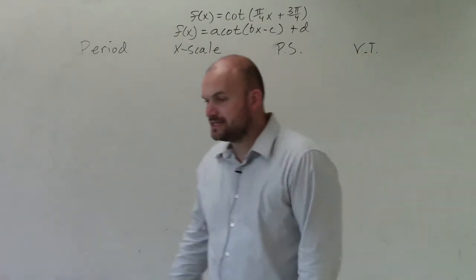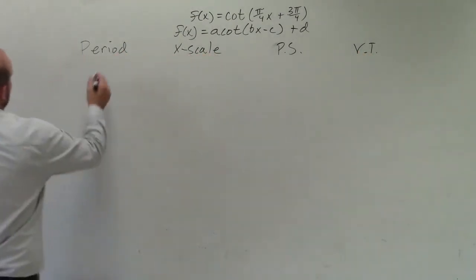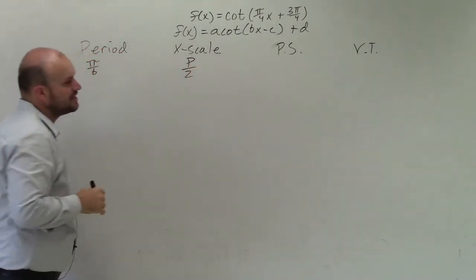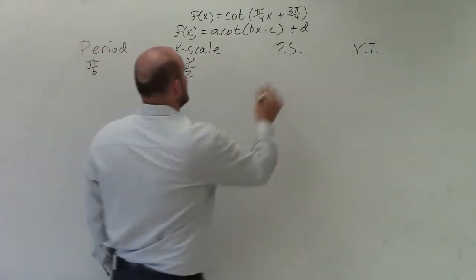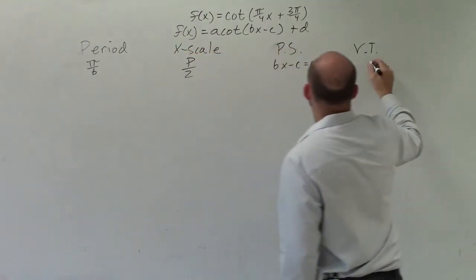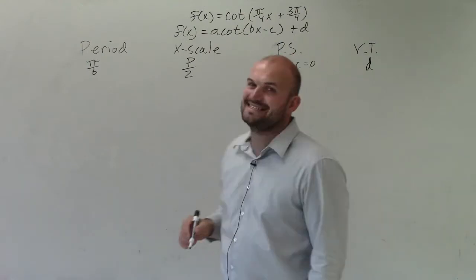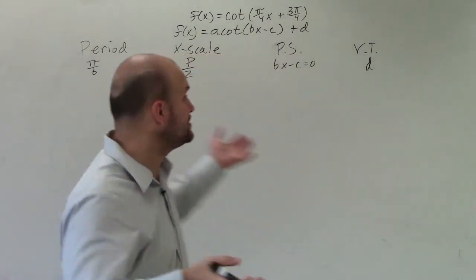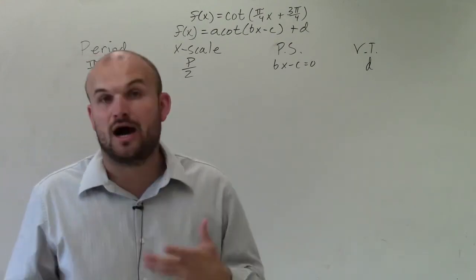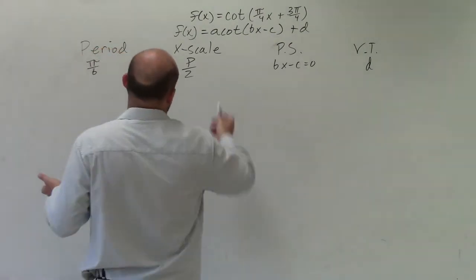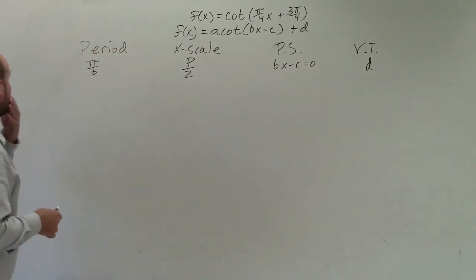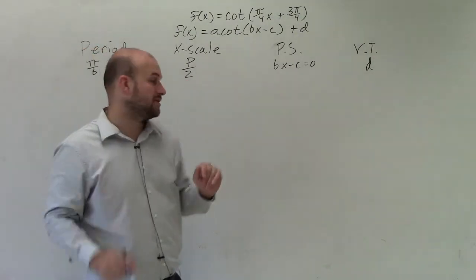When I'm looking at determining the period, we have pi over b. To find the x scale, for cotangent and tangent, I do period divided by 2. Phase shift, we take whatever's inside our function and set it equal to 0. And the vertical translation is d. We also have a, which would represent reflections. But in this case, we see that a is positive, so we don't have to worry about that.